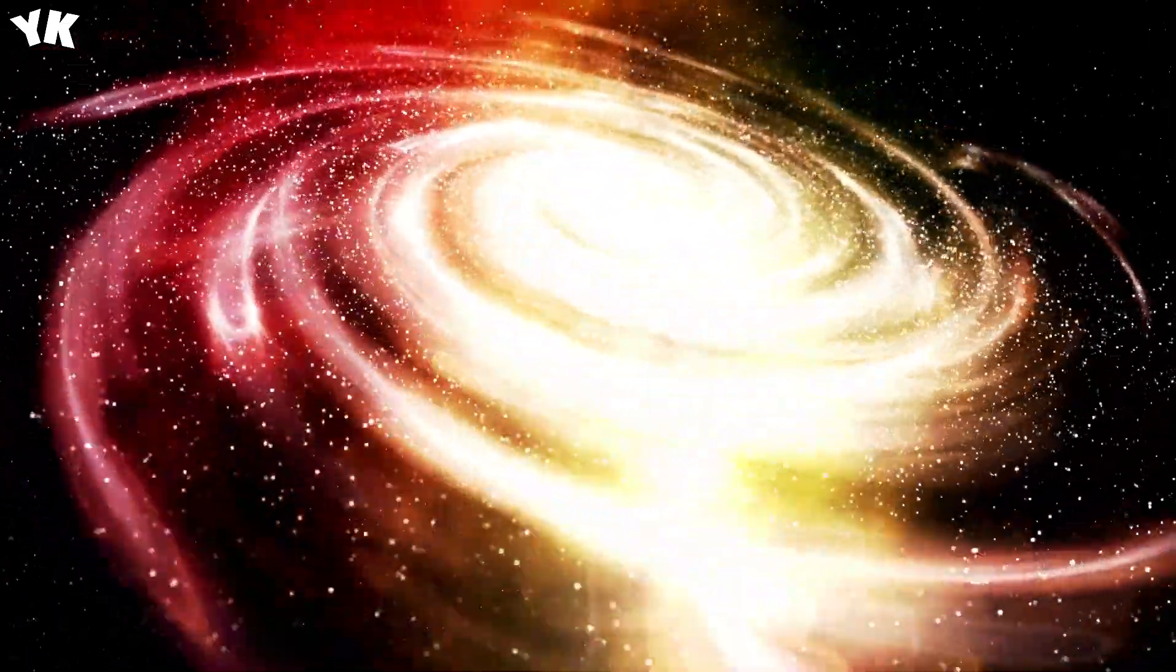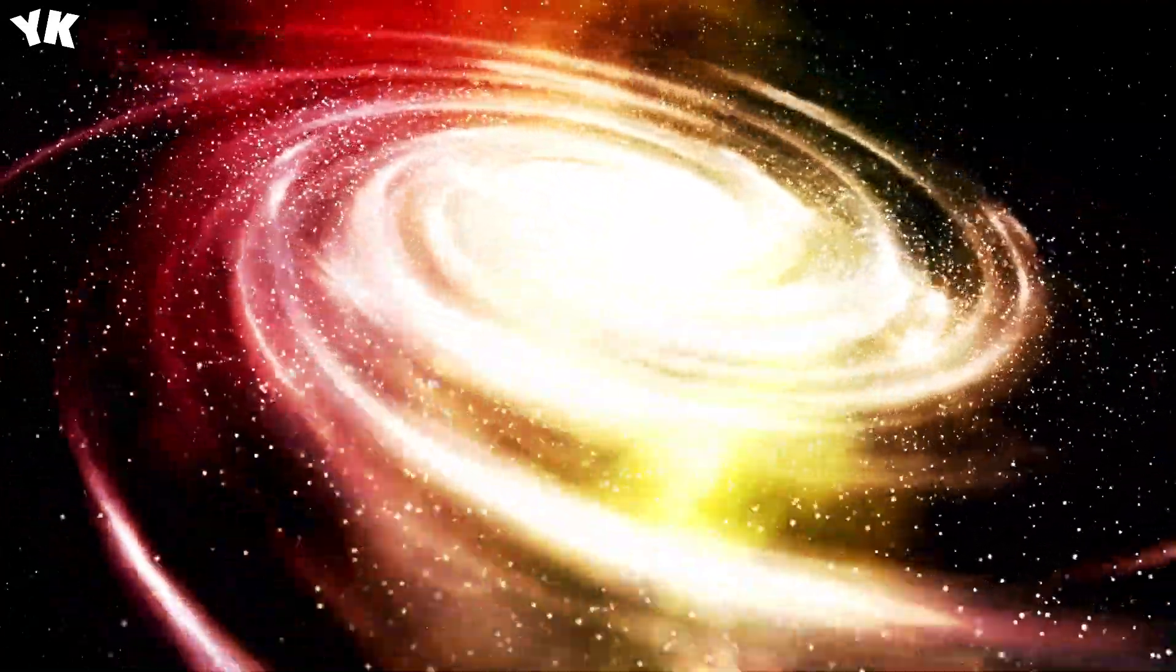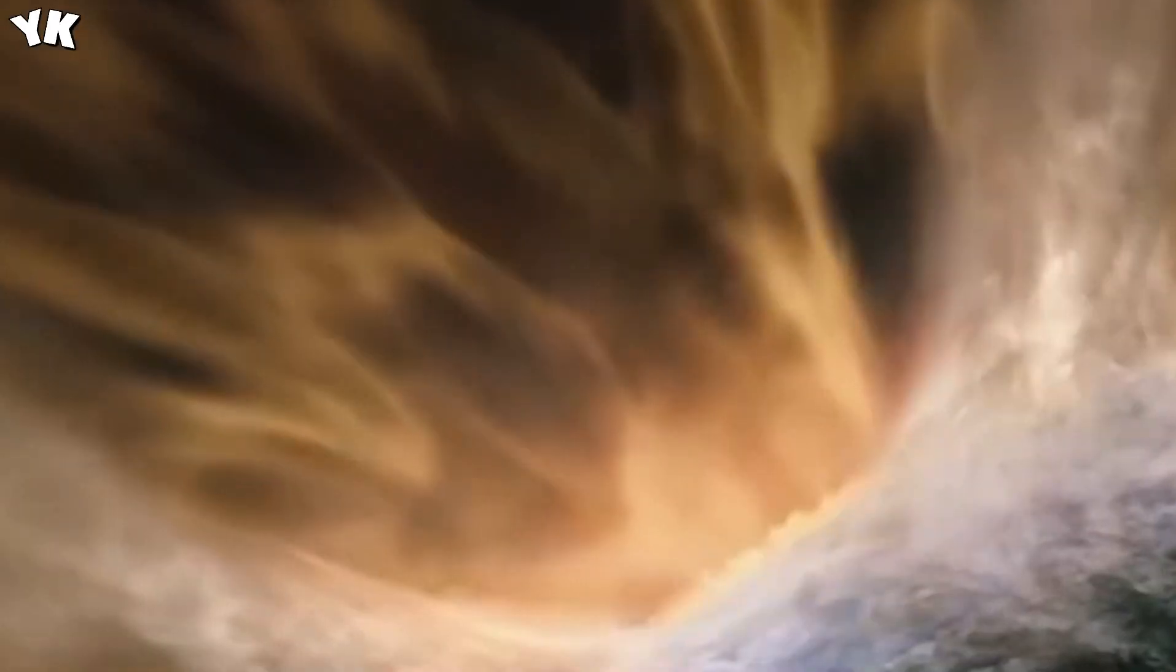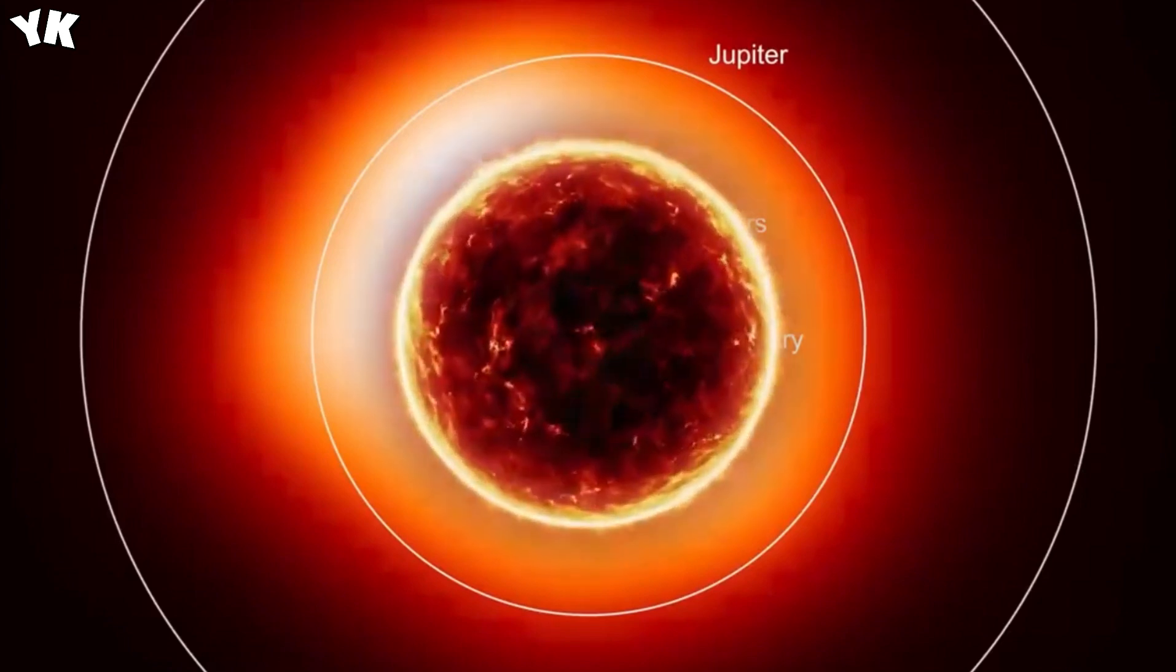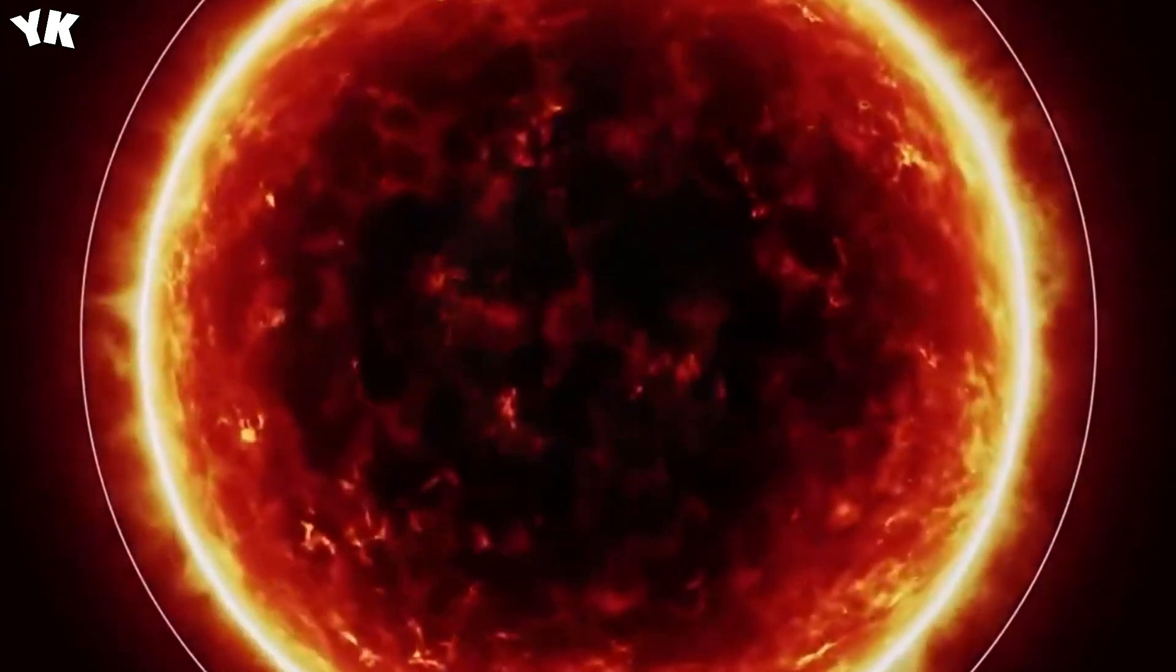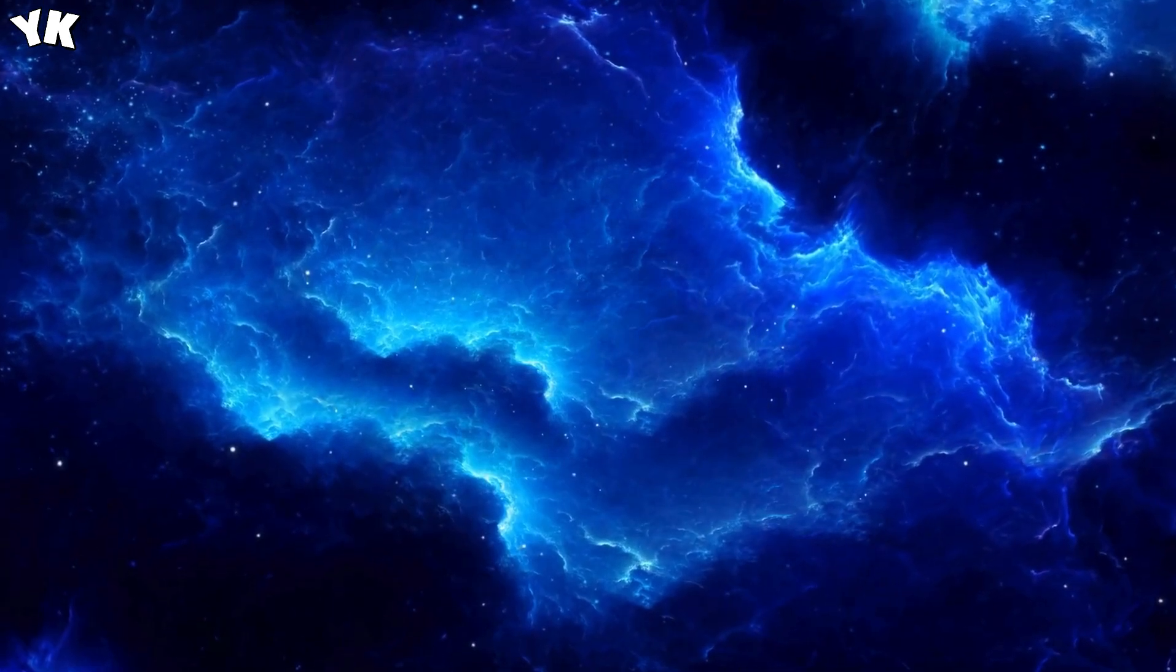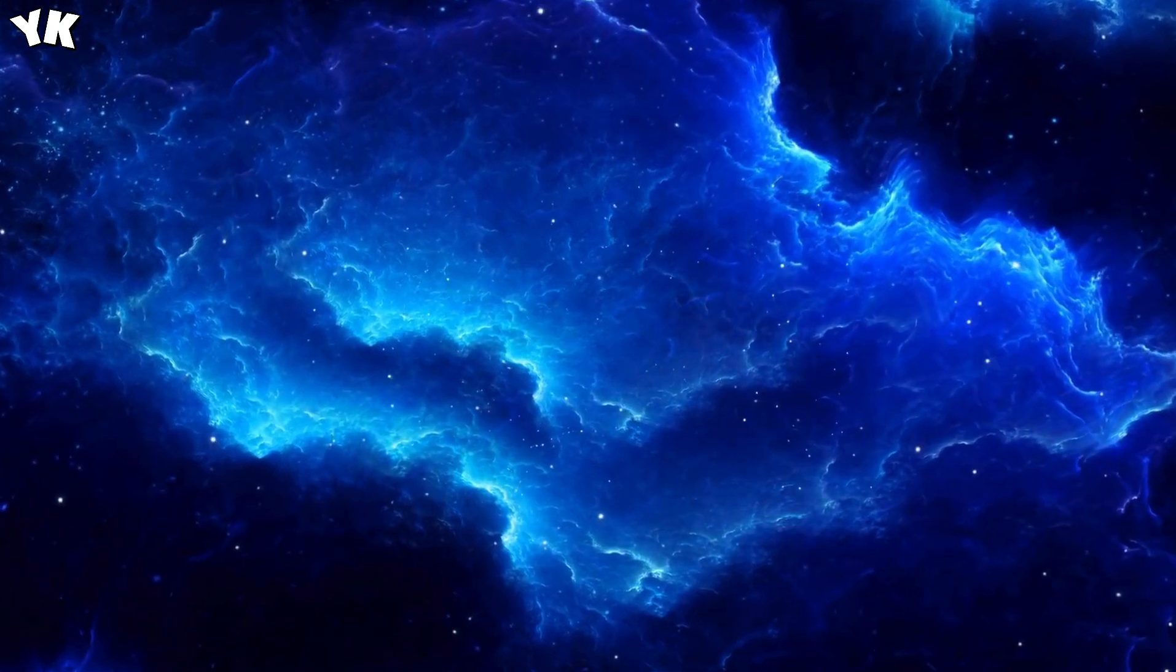Can you imagine a single star dwarfing our entire solar system? To provide some perspective on the sheer enormity of Betelgeuse, if it took the place of our sun, its edges would extend all the way to Jupiter. How can a single star achieve such colossal proportions? At 10 million years old, it's a lot younger than our 5 billion-year-old sun, but Betelgeuse's massive size means it consumes its materials at a much faster pace, predicting a shorter lifespan than that of other stars.